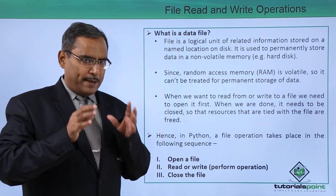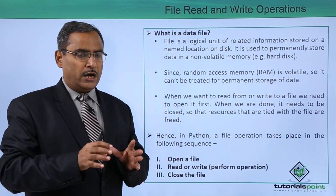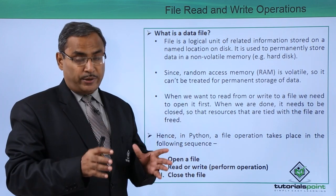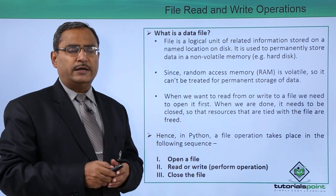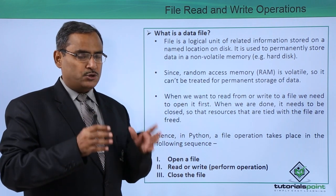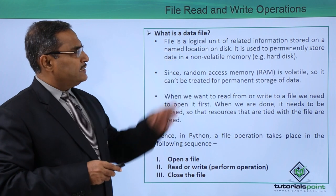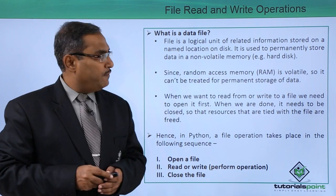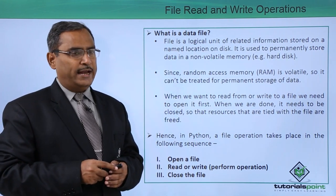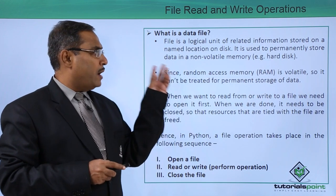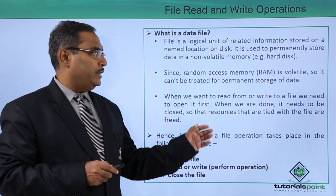We are supposed to have some mechanism with the help of which we can store our data onto a secondary storage, that is a non-volatile storage — let it be a hard disk. The best means to do that is through our data files. A file is a logical unit of related information stored on a named location on a disk, and it is used to permanently store data onto a non-volatile memory.